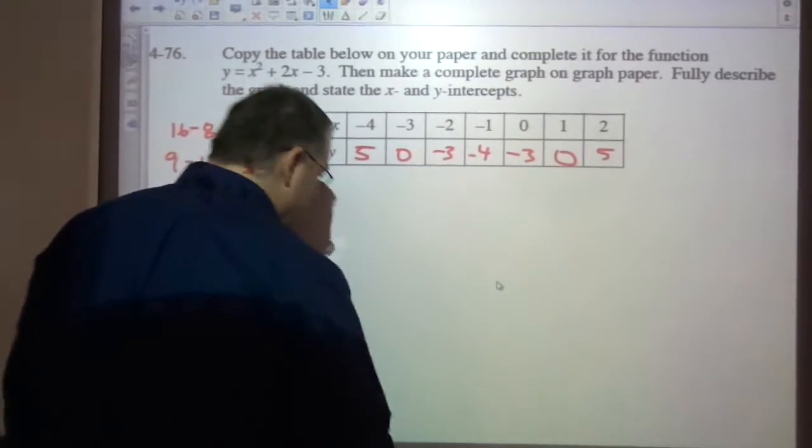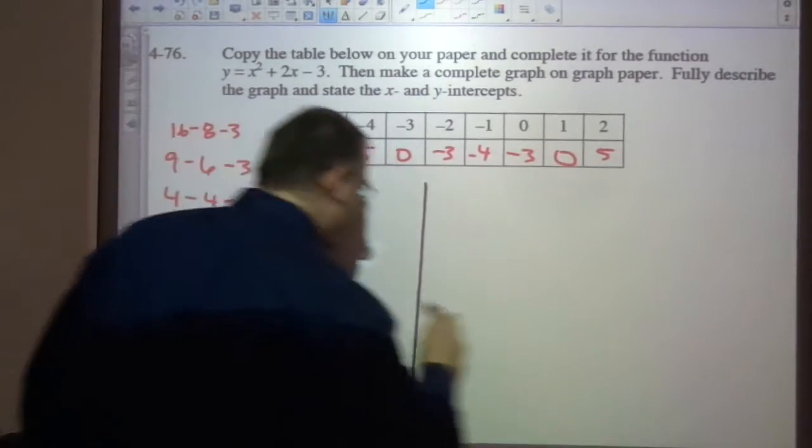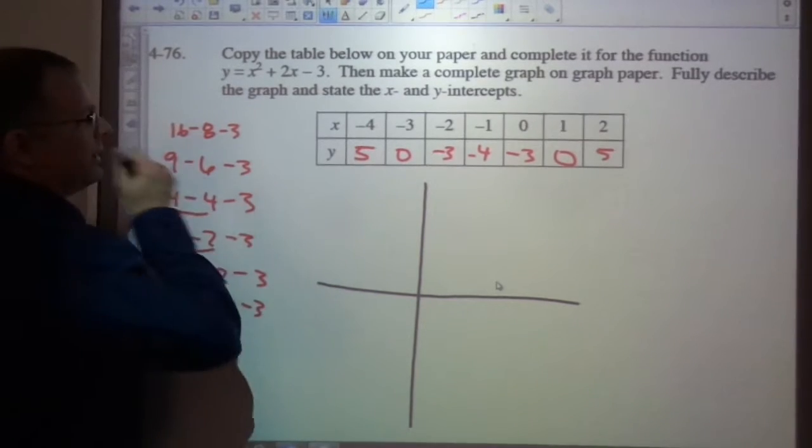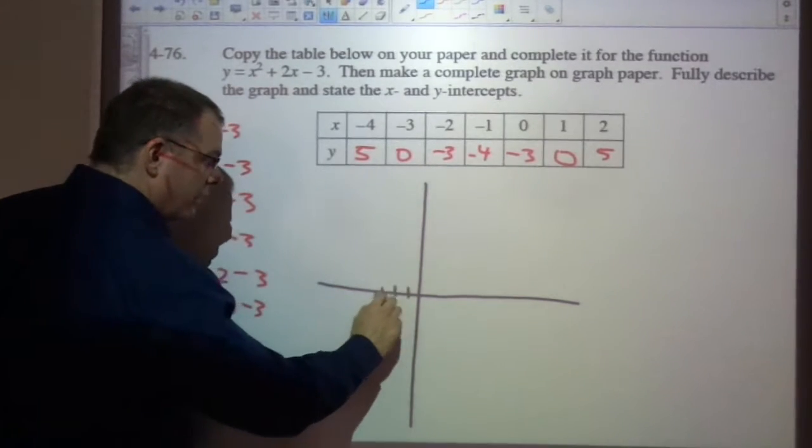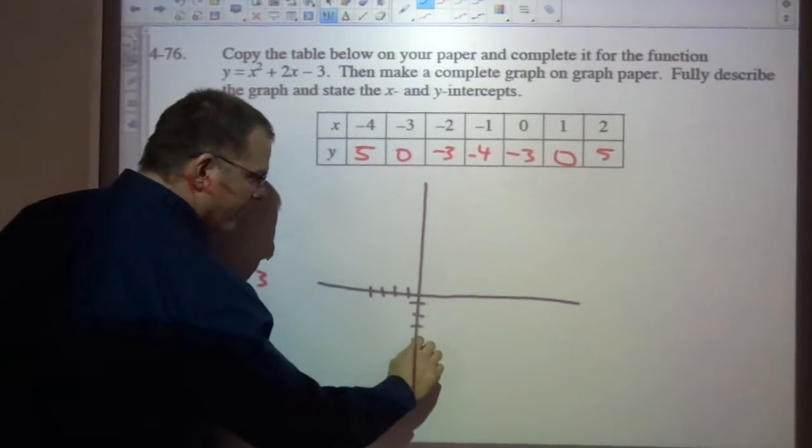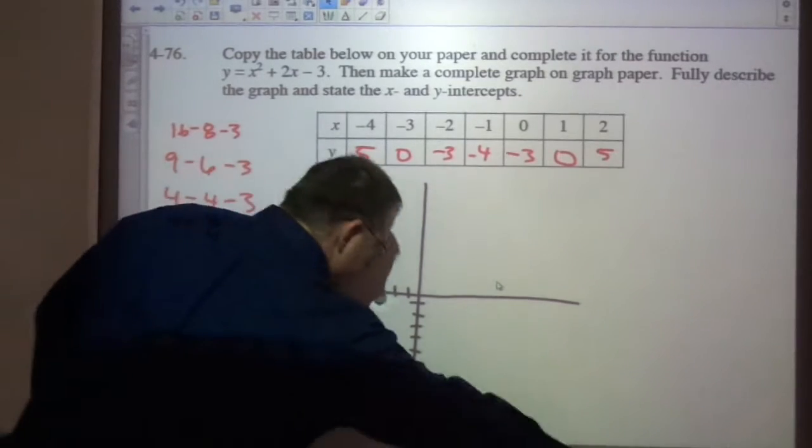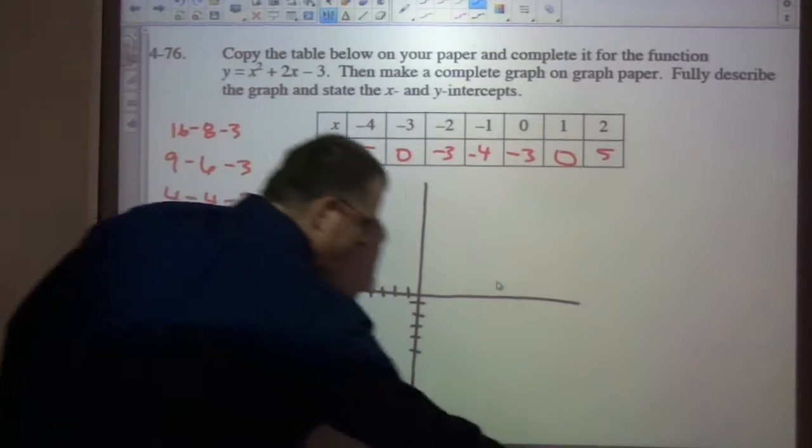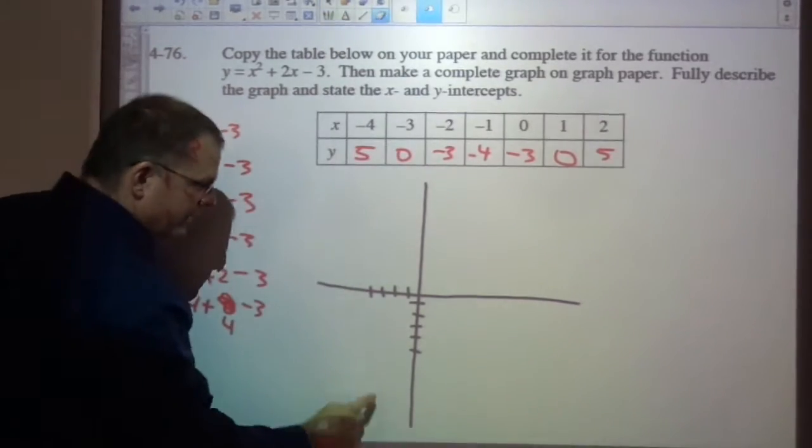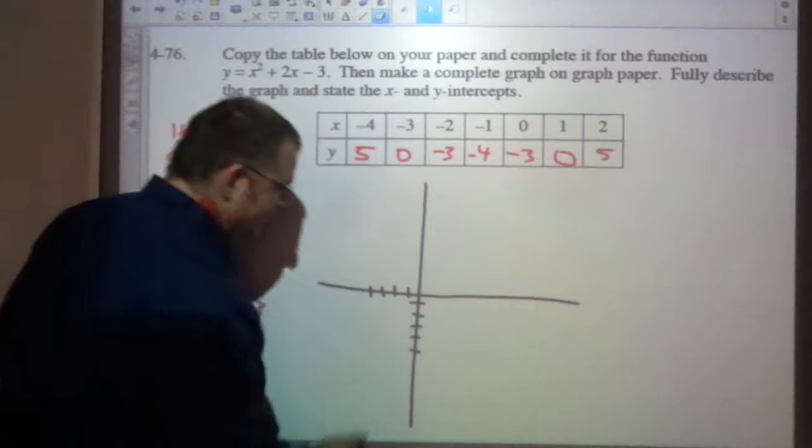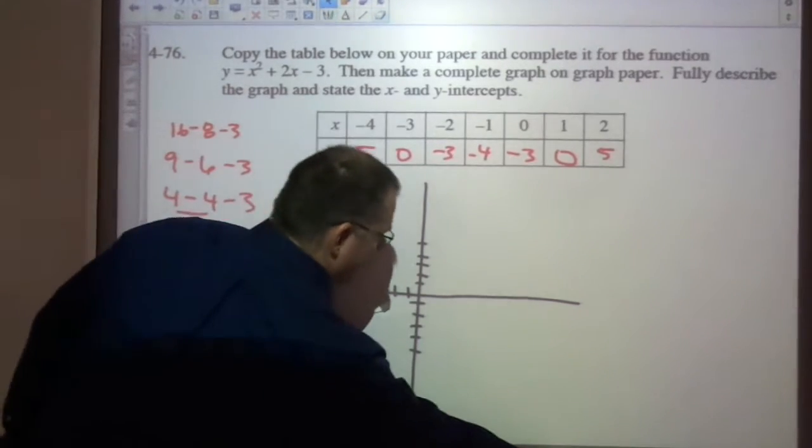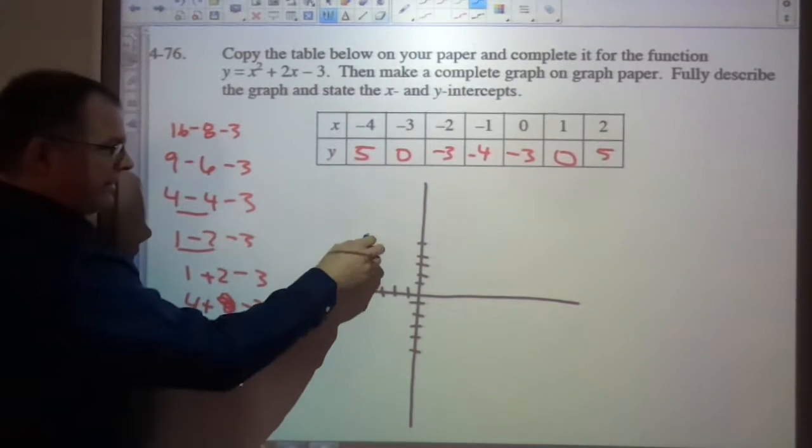So here's our graph. Negative 4, 5. So an x is negative 4, y is 5. Let's go down to here. No, no, x is, sorry, it's positive. Positive 5. Stupid teacher. I'll get it right next time. I won't go up. I'll just keep trying. Negative 4, 5.